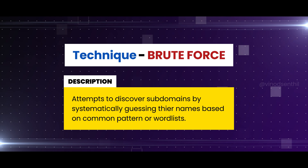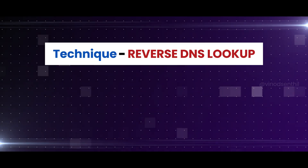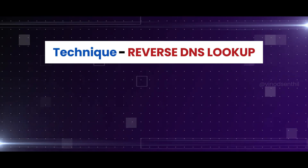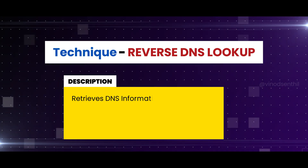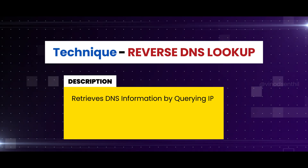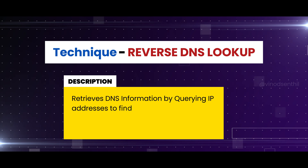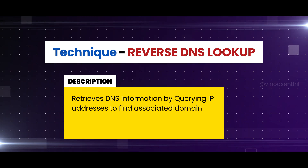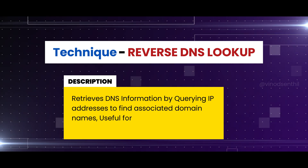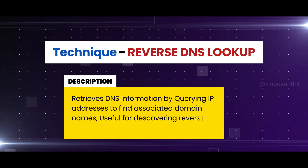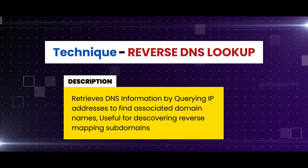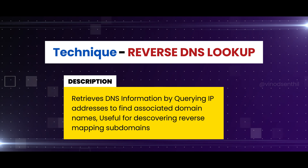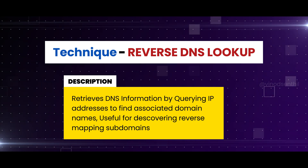Number two: reverse DNS lookup — retrieves DNS information by querying IP addresses to find associated domain names, useful for discovering reverse-mapped subdomains.